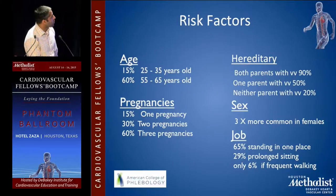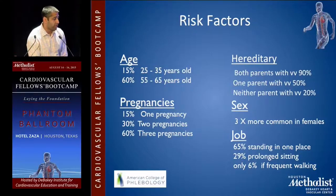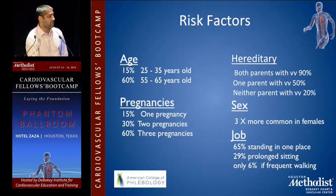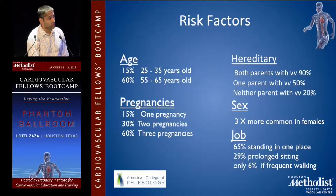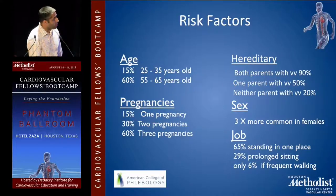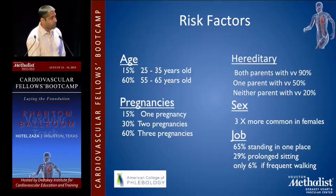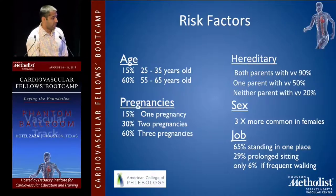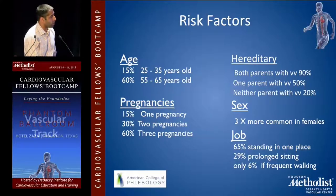Risk factors: 15% of patients are 25 to 35 years of age; most patients are older, between 55 and 65. Pregnancy increases the chance of varicose veins — 15% with one pregnancy, 30% with two, 16% with three. It's hereditary in most cases: both parents with varicose veins gives a 90% risk, one parent 50%, and no parent about 20%. Female gender increases risk. Long periods of standing or sitting increases risk, and only 6% if you walk frequently — so walking is a good thing.